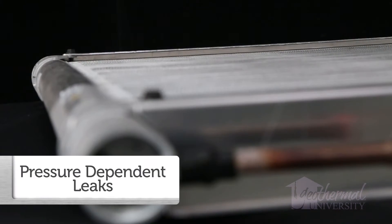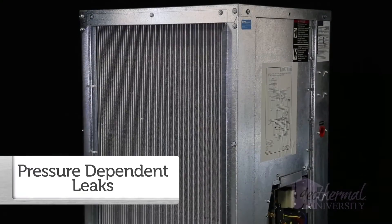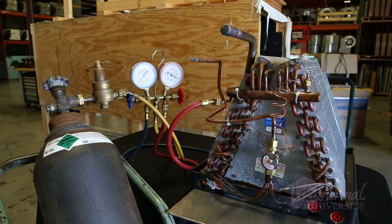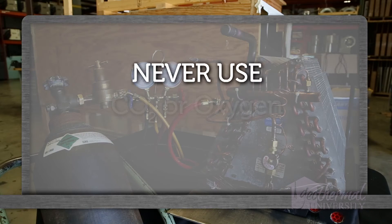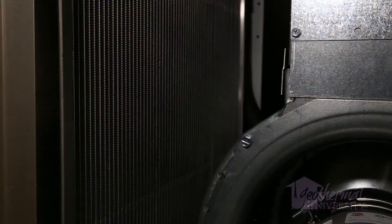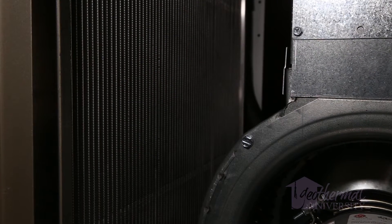There's pressure dependent leaks which are leaks that can only be detected as the pressure is built. Nitrogen is used to pressurize a system up to 400 psi. Never use CO2 or oxygen. Helium will also work. Pressure dependent leak testing should be conducted if no leaks are discovered by the standing test.